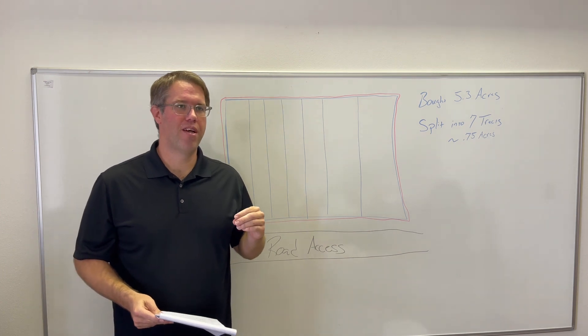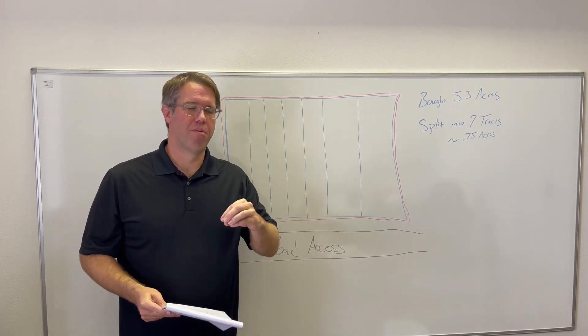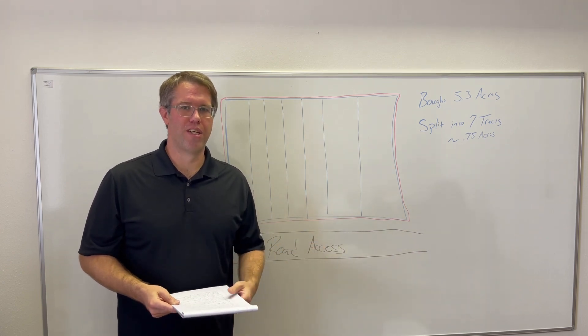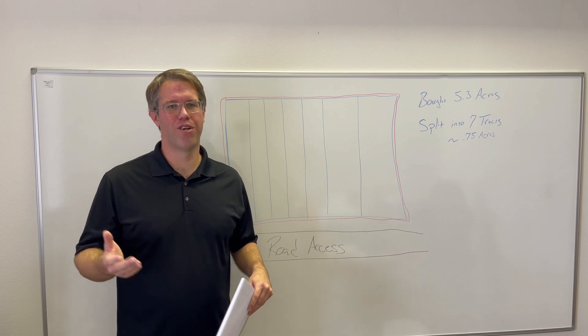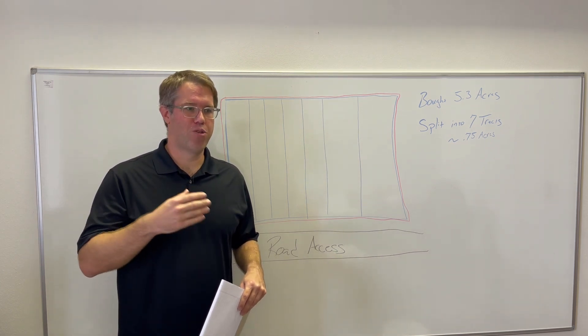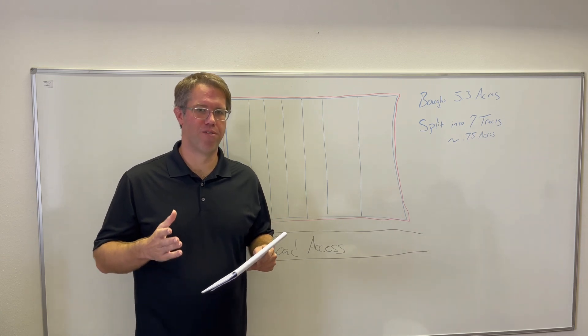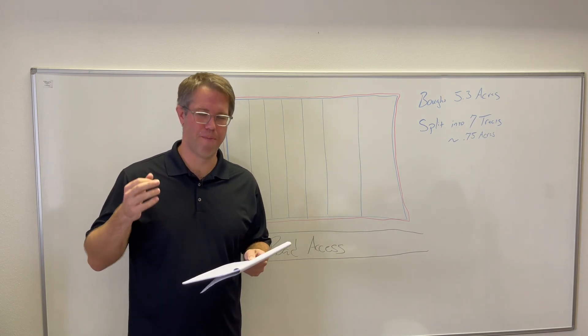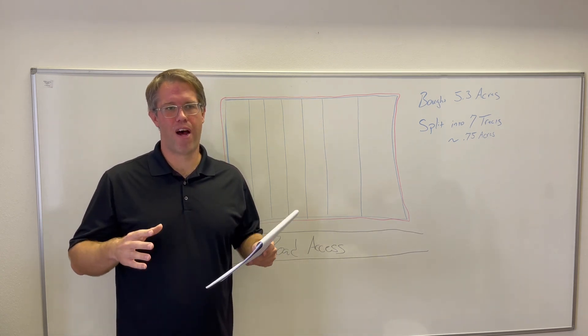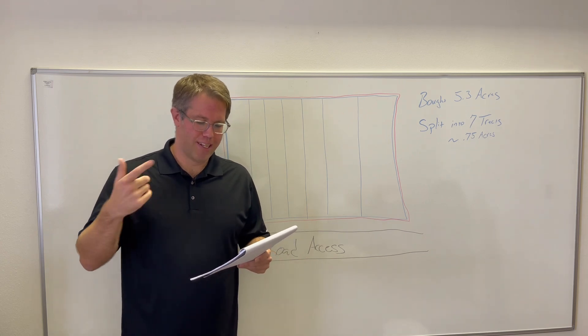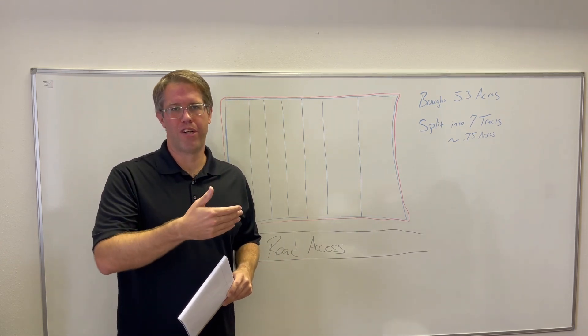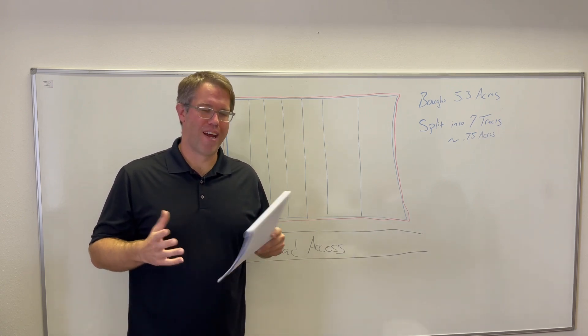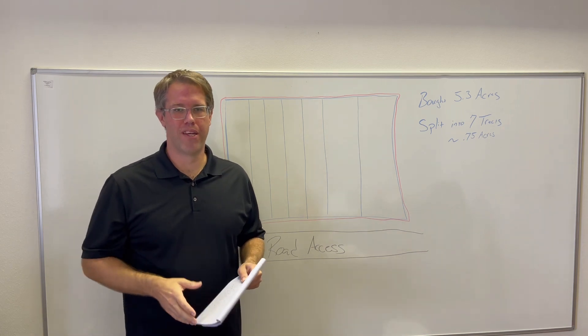So I purchased this property that's 5.3 acres for $100,000 at a tax foreclosure auction. I knew it was a good property as a target for subdividing because the surrounding properties were all much smaller, you know, the properties across the street are all quarter acre, half acre, under an acre lots. So that's what was in the neighborhood. I've done other deals in that area before, so I'm familiar with the market. I did another subdividing video like one street over from this one.